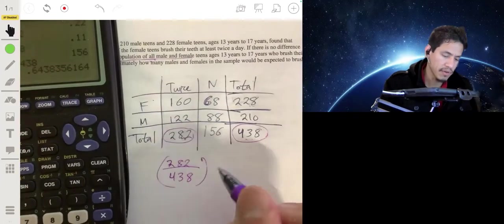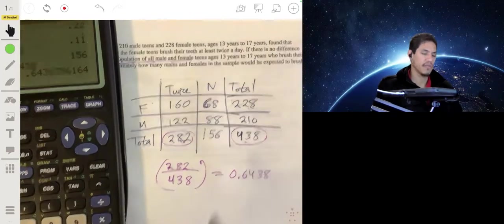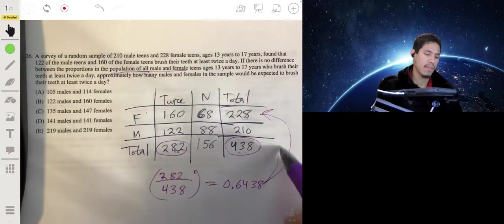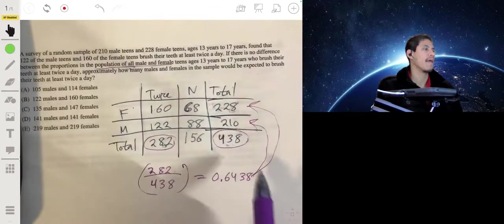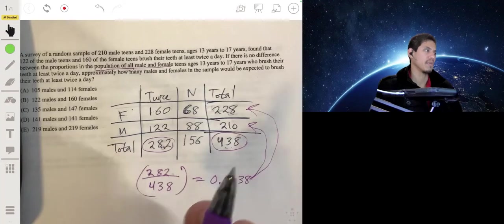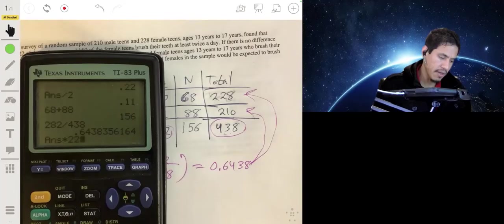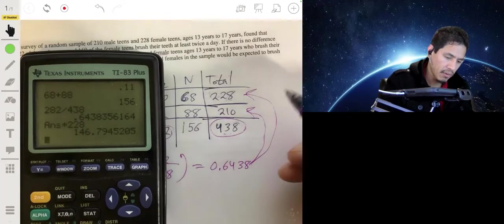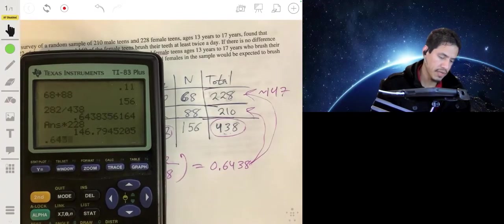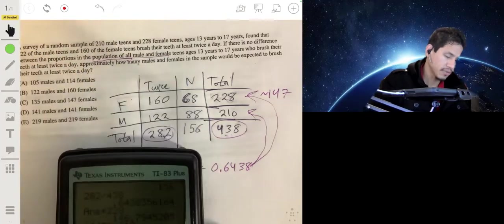We're saying that it would be about 64%, about 0.6438. Now, for this, we would just multiply it by the total females and by the total males, and whatever values we get, those would be the ones that we would expect. So we take this number, multiply it by 228, and that would be about 147.